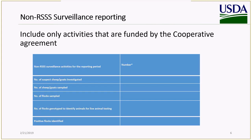For non-RSS surveillance reporting, it's pretty similar. We'll want to know the number of suspect sheep investigated, the number of sheep or goats sampled, the number of flocks sampled, the number of flocks genotyped to identify animals for live animal testing, and the number of positive flocks identified.